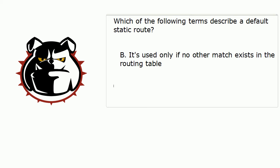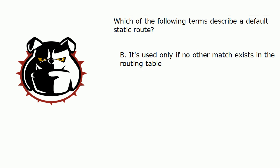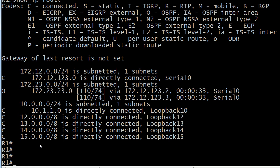Now let's assume we've been asked to write a default static route, and we're going to use the exit interface serial zero to do so — that's where we want all traffic sent if the default static route comes into play. Let's bring up the live equipment. What's the routing table code going to be for a default static route? The complete one — and you know that's a hint when I say 'the complete one.'